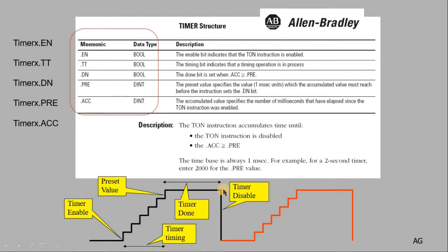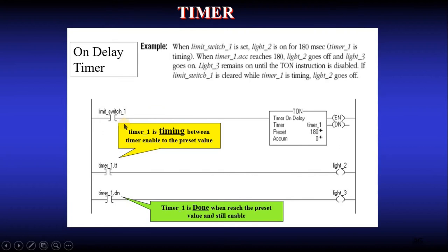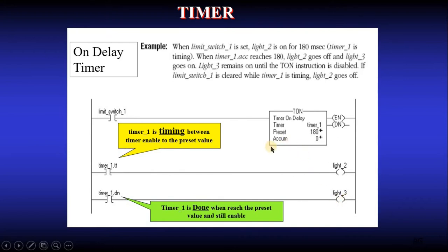Here's a real Allen Bradley example: if limit switch one is on, your timer starts timing and TT is on, so light 2 turns on. When you reach the preset value of 180, TT stops — light 2 goes off — but the Done bit turns on and light 3 turns on. So between start and 180 you have light 2; once you reach 180 and the switch is still on, light 3 turns on.